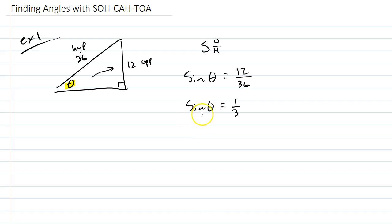Now, to undo this sine, to get theta alone, this is when you use the sine inverse. So if you have to go backwards and find the angle, you're going to be using this, the sine inverse, also sometimes called the arc sine.